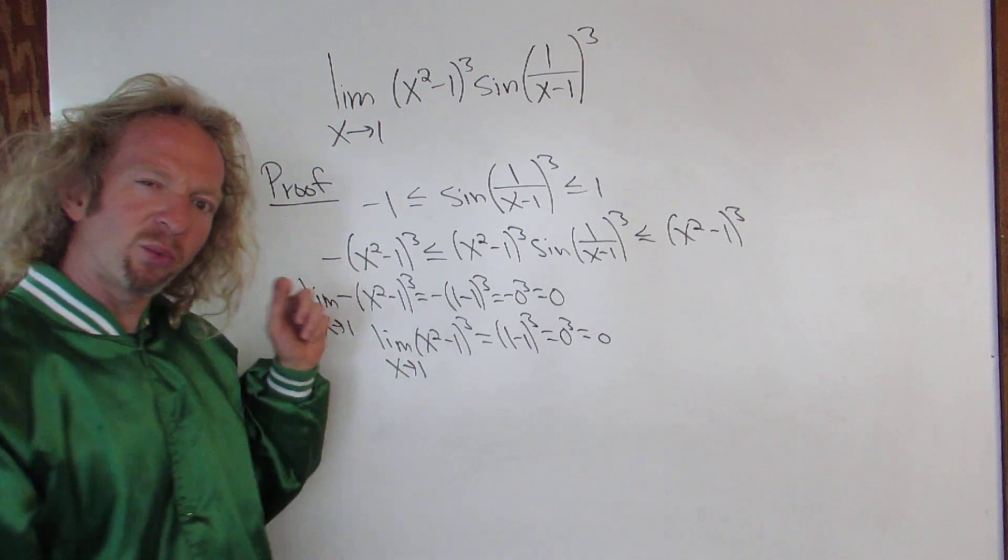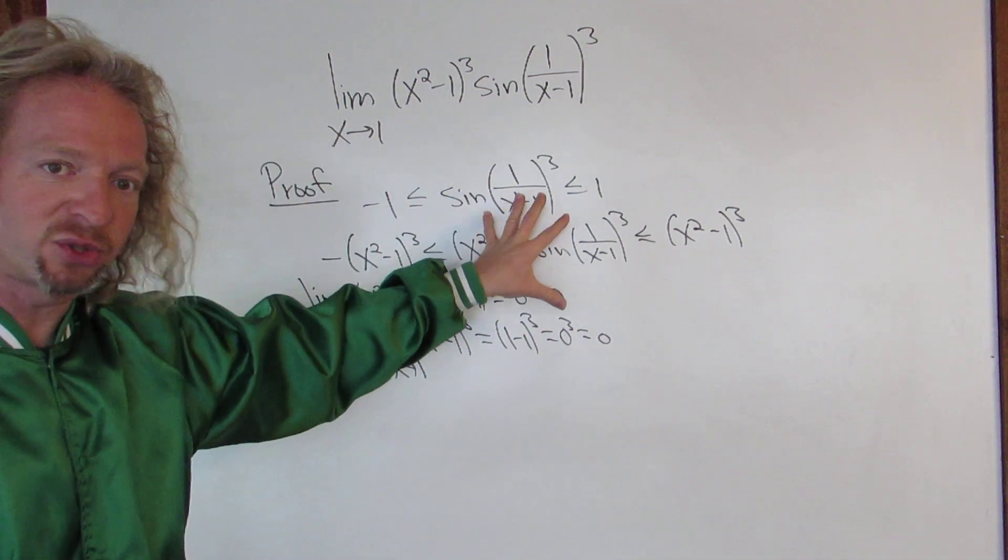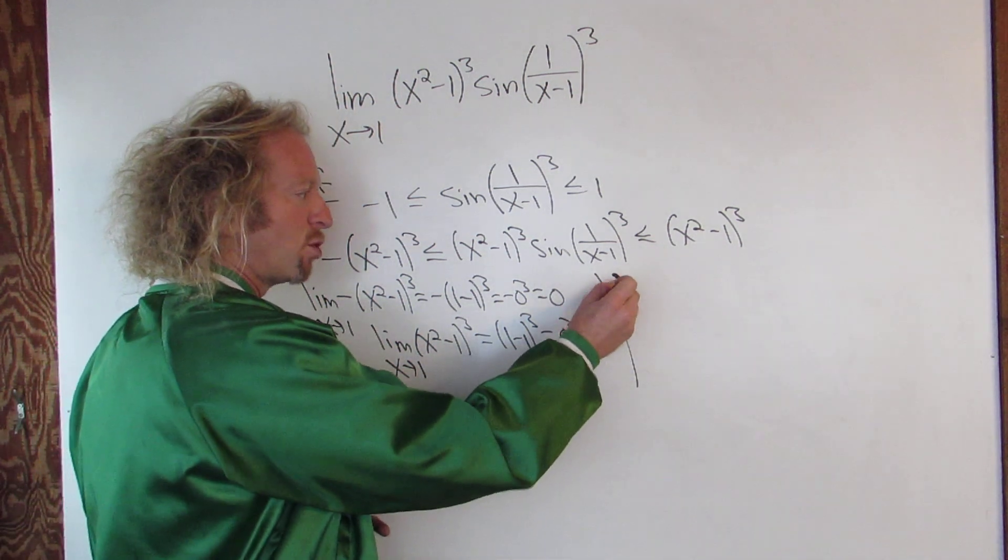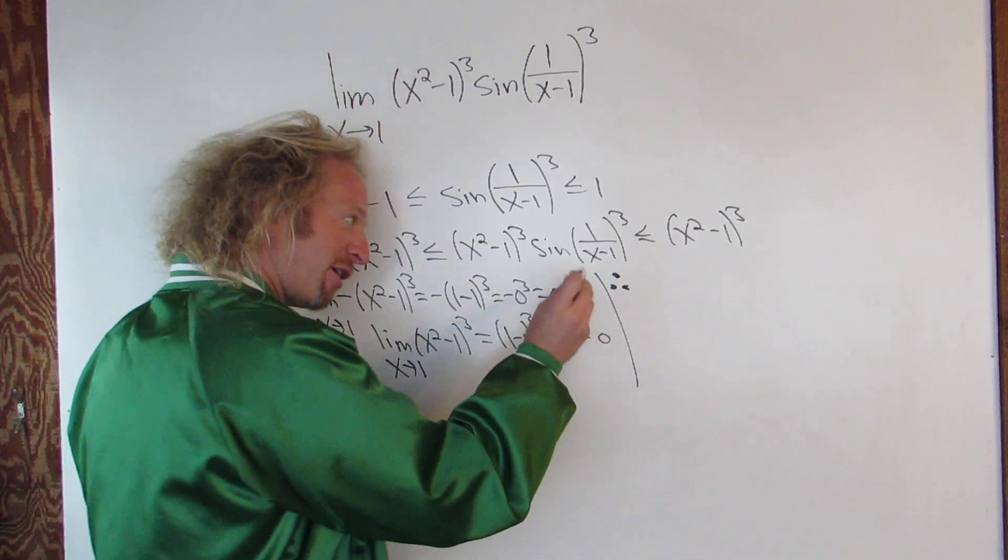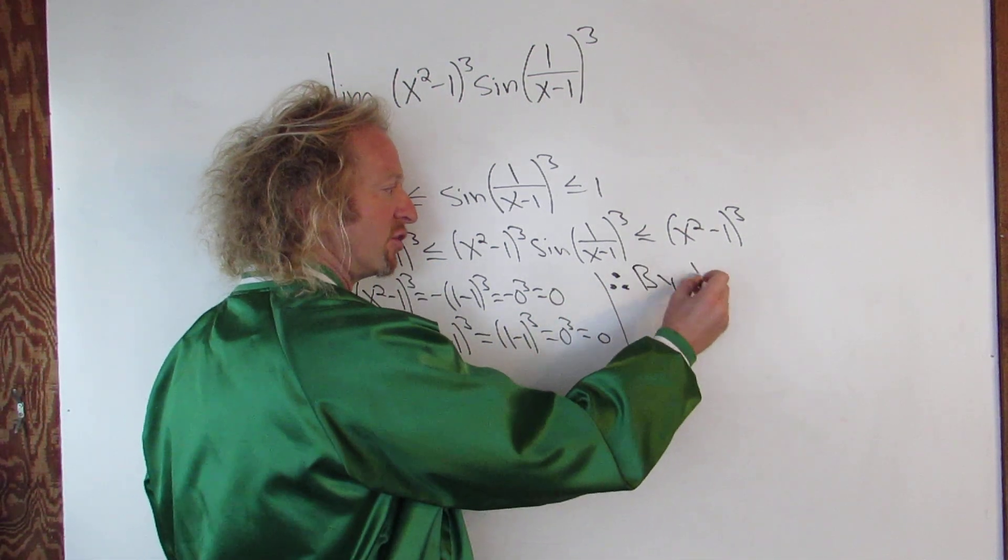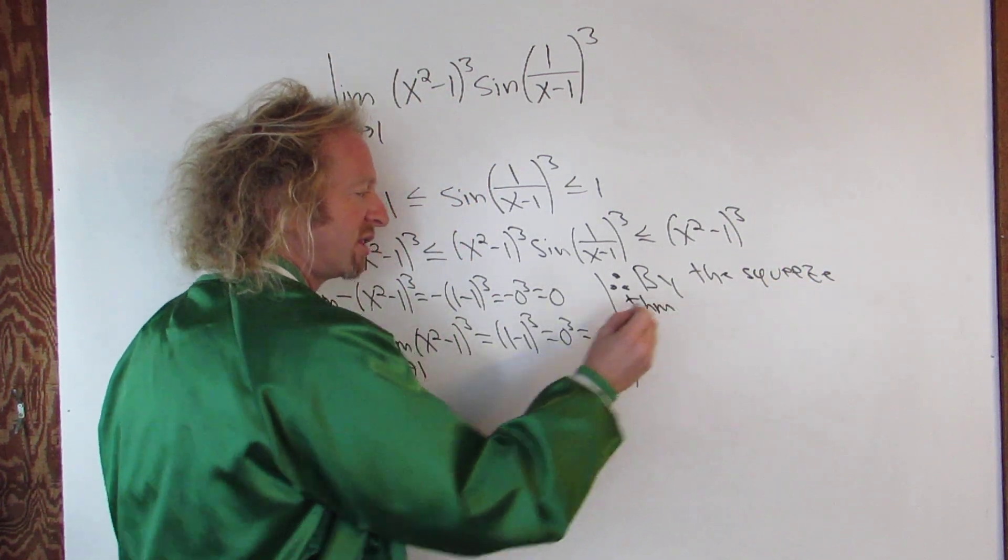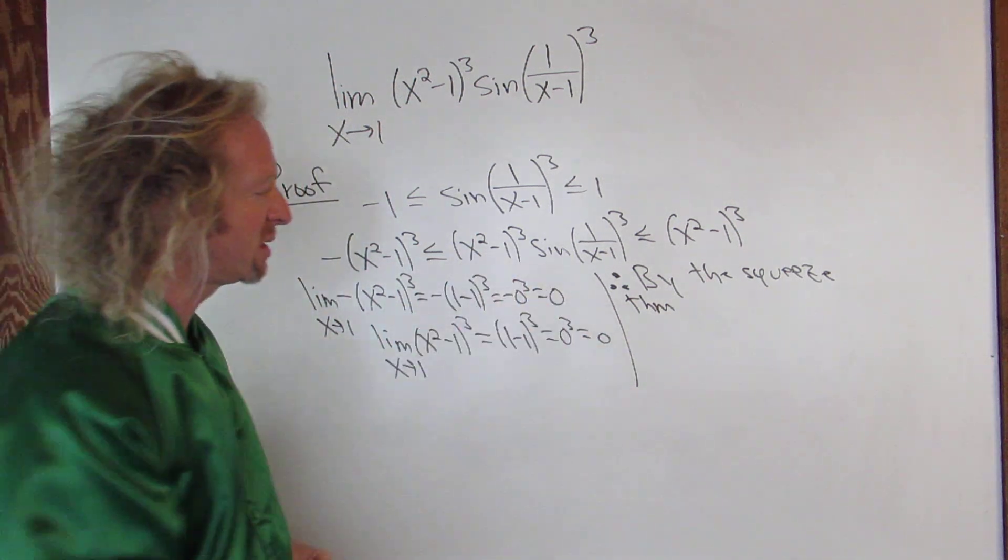So we took this limit and we got 0, we took this limit and we got 0. Therefore, by the squeeze theorem, when you take this limit, you also get 0. So that should be said, it's all said over here. So therefore, by the squeeze theorem, it's important to let the reader know that you're invoking the squeeze theorem.